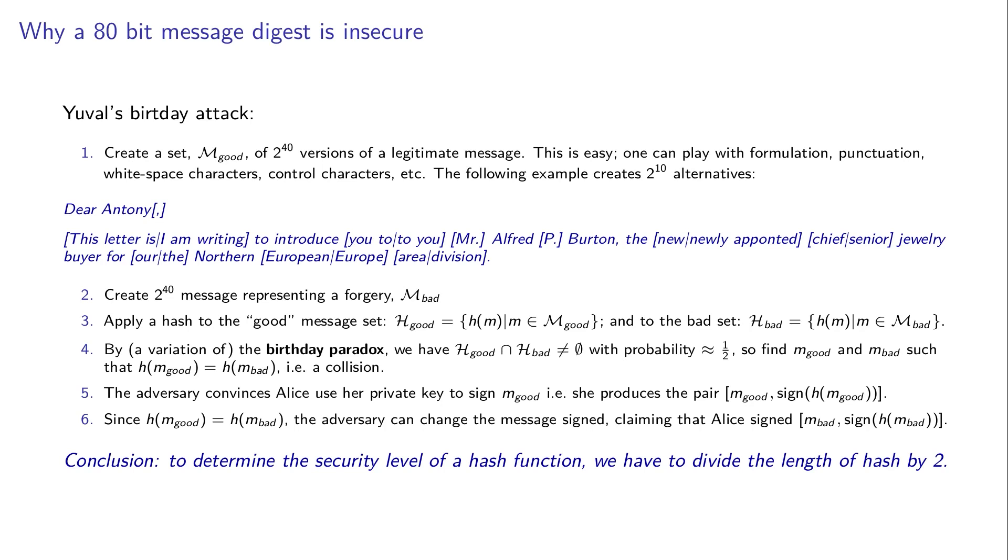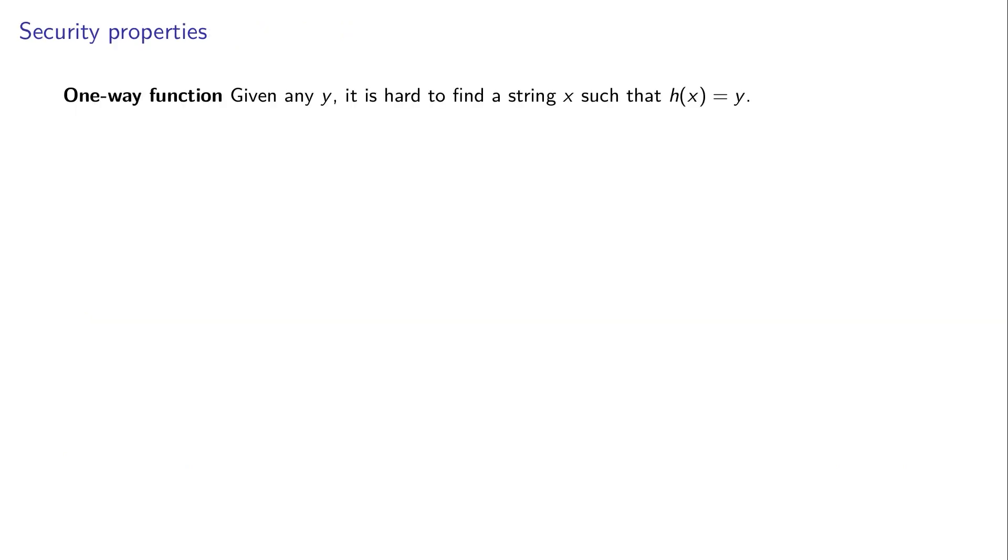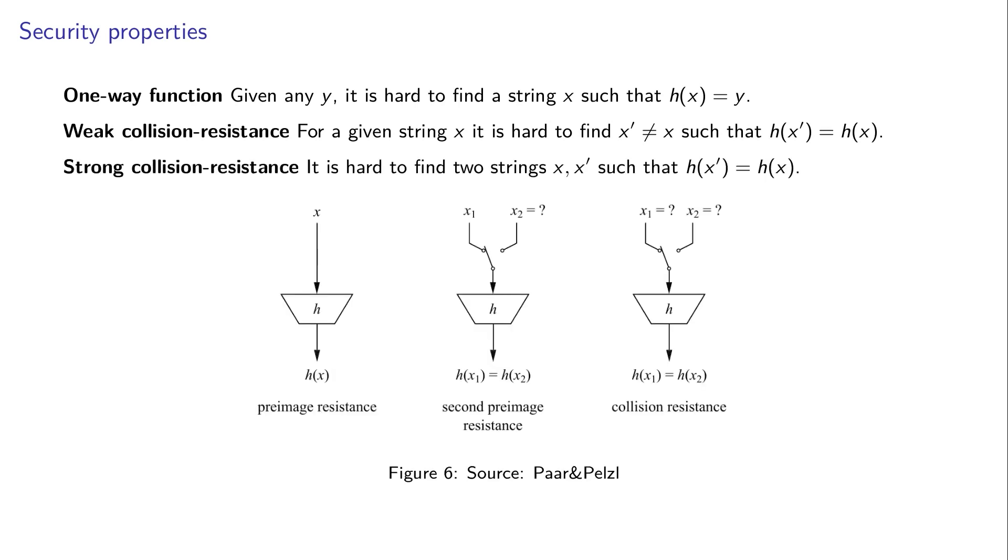First let me mention the security properties. We have one-way function, but we need something stronger, we need collision resistance. But actually we need something stronger than that which is called strong collision resistance, which is exactly the property I stated in the previous slide, that it's not possible to find two messages X1 and X2, or X and X prime, which result in the same hash. So it's important that you understand the importance of the strong collision resistance property.